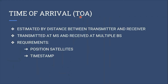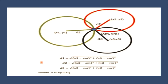Time of Arrival is estimated by the distance between transmitter and receiver — transmitted at a mobile station and received at multiple base stations. Requirements for this technique are positioned satellites and time stamps. Basically, the distance between mobile station and base station equals propagation time multiplied by propagation velocity.